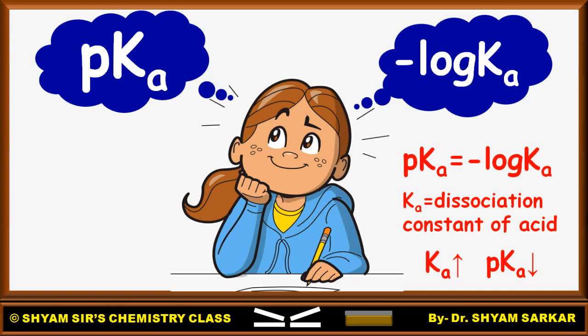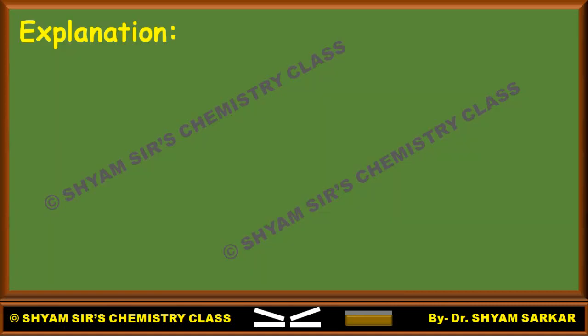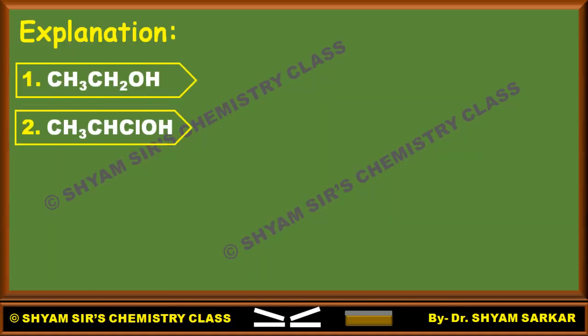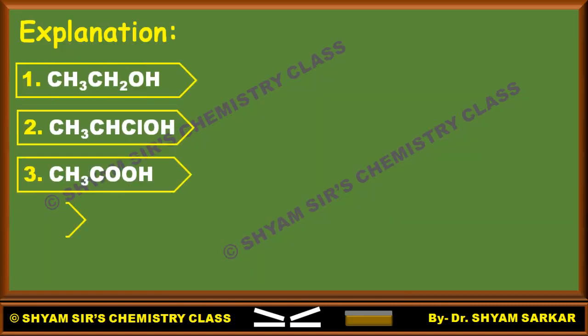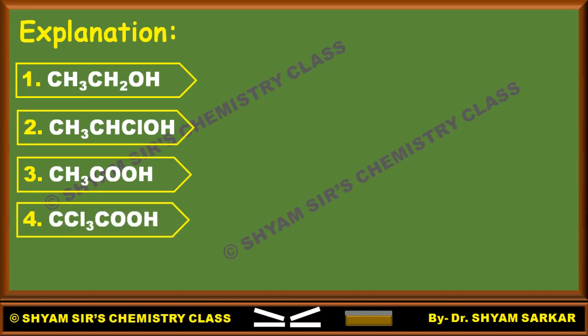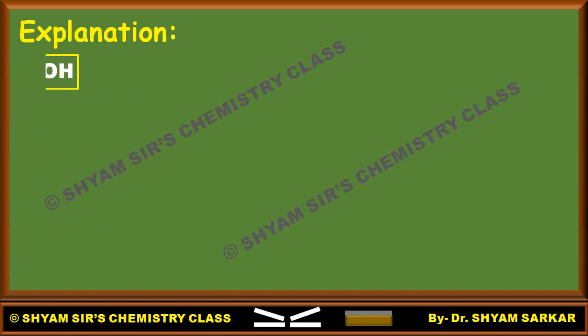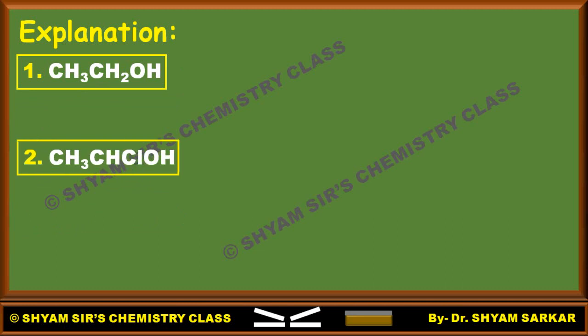Now let us come to this question. Four molecules are given: ethanol, chloroethanol, acetic acid, and trichloroacetic acid. First, we will compare the two alcohols.